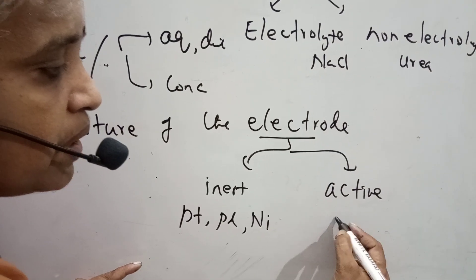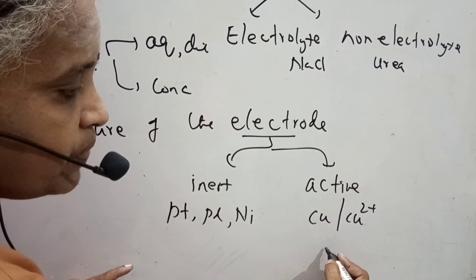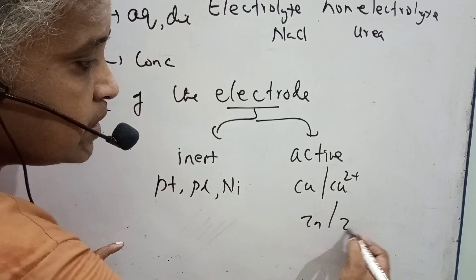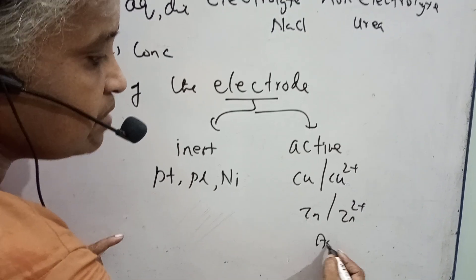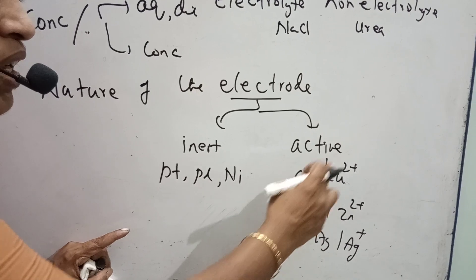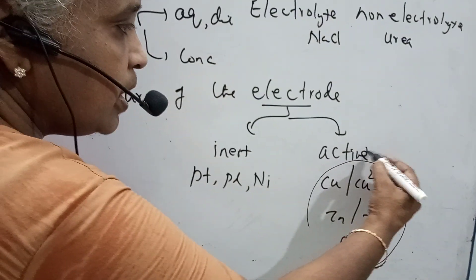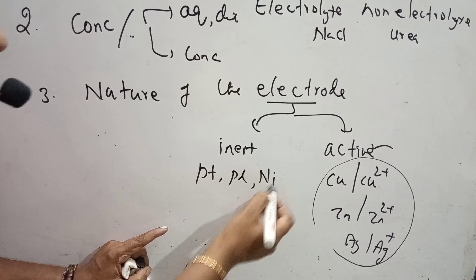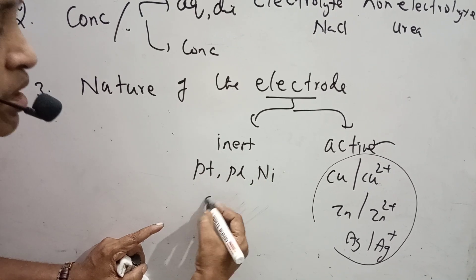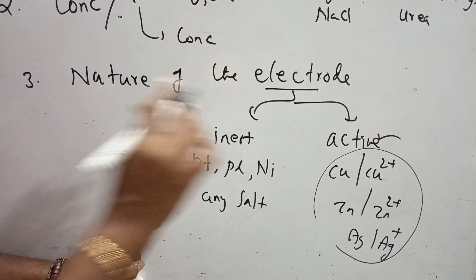Whereas an active electrode means the metal in its own metal salt solution — that is, copper in copper sulfate solution, or zinc in zinc sulfate solution, or silver in silver ion solution. So metal in the same solution is called an active electrode, while platinum or palladium in any solution is called an inert electrode.